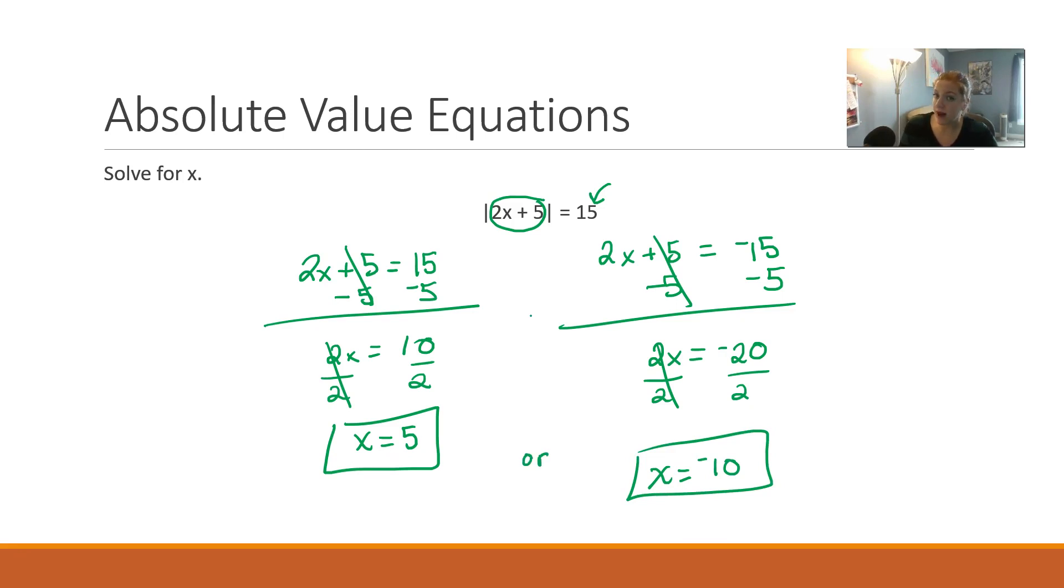So x could be 5, and I can plug it in and check myself. 2 times 5 would be 10, 10 plus 5 is 15. Great, because the absolute value of 15 is 15. That works.